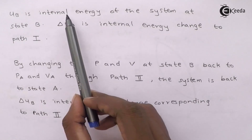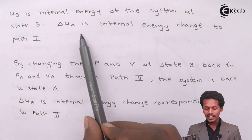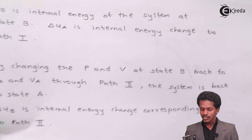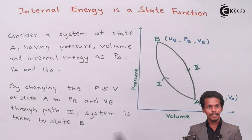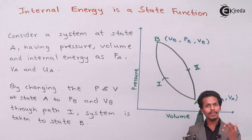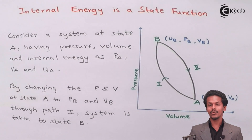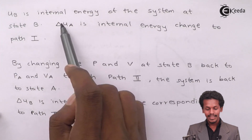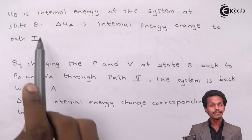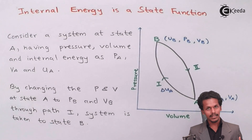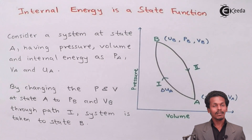U_B is the internal energy of the system at State B. Therefore, delta U_A is the change in internal energy corresponding to Path 1. When we changed the pressure and volume from (P_A, V_A) to (P_B, V_B), the internal energy also changed from U_A to U_B. This change through Path 1 is represented as delta U_A.